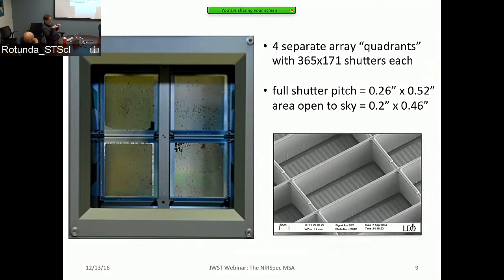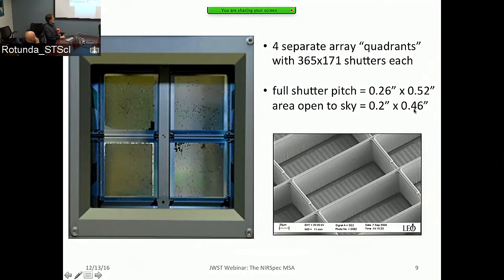The subsystem is constructed of four separate, roughly identical arrays called quadrants. Each quadrant is an array of 365 by 171 shutters, each independently operable. The full shutter pitch on the sky is 0.26 by 0.52 arc seconds, while the actual open area per shutter is 0.20 by 0.46 arc seconds. Multiple shutters can be opened to form a slit on the sky, though shutter bars between doors block some light.